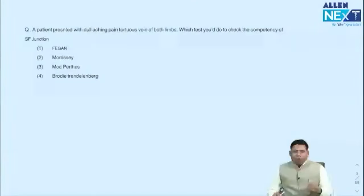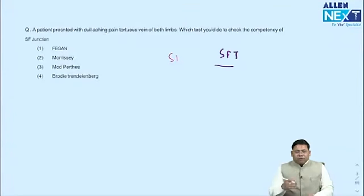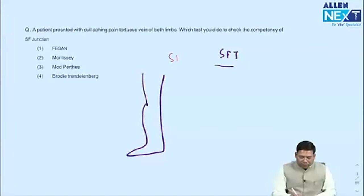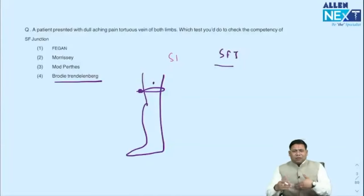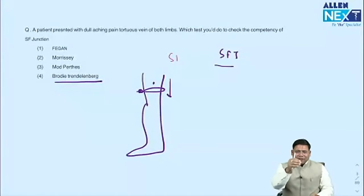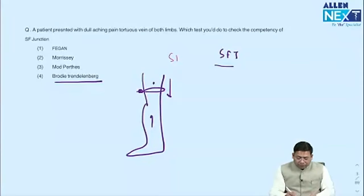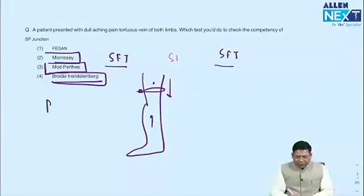Next: a question on SFJ (sapheno-femoral junction) incompetency. Clinical tests include the Brodie-Trendelenburg test — elevate the limb, tie a tourniquet, allow the limb to fill, then release. If filling goes from top to bottom (from near the SFJ), it is SFJ incompetency. If filling goes from bottom to top, it is perforator incompetency. Tests for SFJ incompetency include Trendelenburg, modified Perthes, and Mauritius. Feagan's test assesses perforator incompetency, identified by subfascial depression.